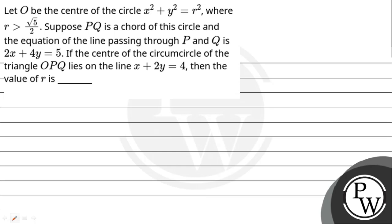Hello students, let us read the question. Question says: let O be the center of the circle x² + y² = r², where r is greater than root 5 divided by 2. Suppose PQ is the chord of this circle and the equation of the line passing through P and Q is 2x + 4y = 5. If the center of the circumcircle of triangle OPQ lies on the line x + 2y = 4, then find the value of r.